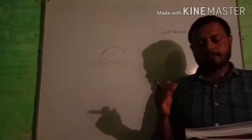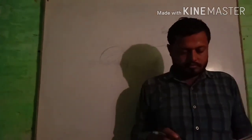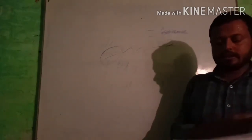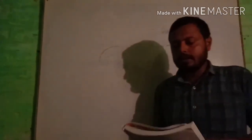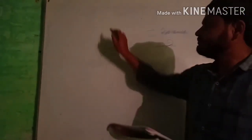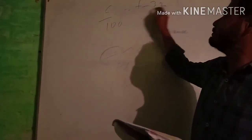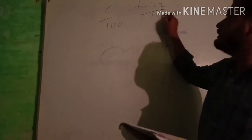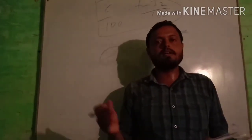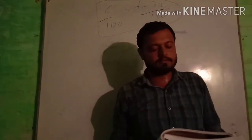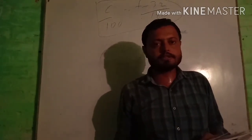Thermometer का upper point और lower point होता है. हम लोग different units में temperature discuss कर रहे हैं. इसके बाद हम relation discuss करेंगे: C/100 = (F - 32)/180. यह formula है जिससे degree Celsius को Fahrenheit में और Fahrenheit को degree Celsius में convert करते हैं.